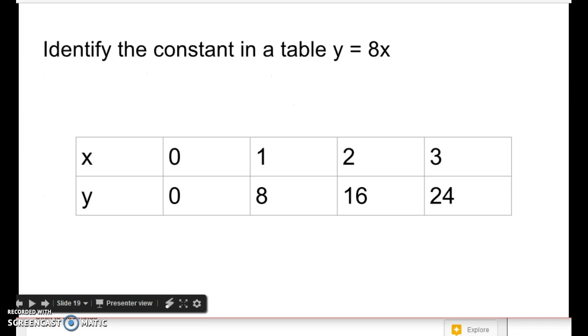So let's take a look at what it looks like in a constant table. You can see on this table there's two ways to find the constant. If you move left to right, it's always increasing by 8. Or if you divide the y divided by the x, 8 divided by 1 is 8, 16 divided by 2 is 8, 24 divided by 3 is 8. So our constant is 8.